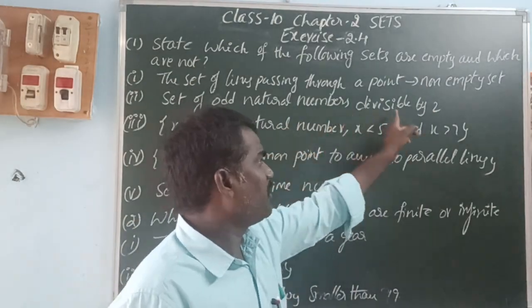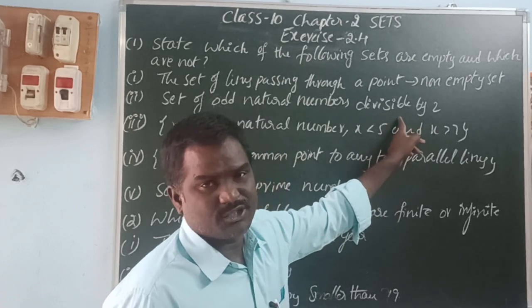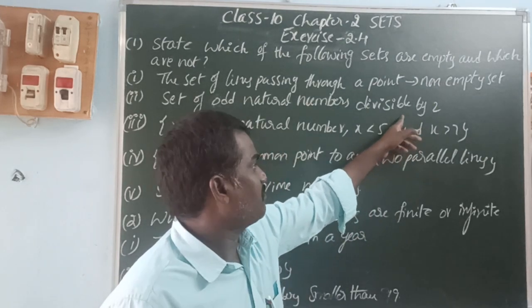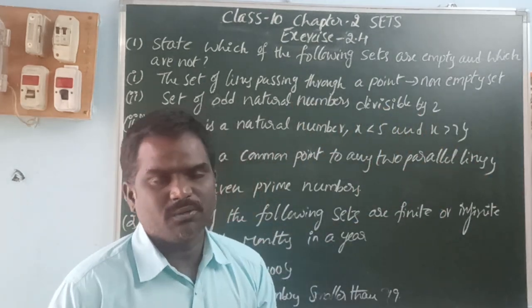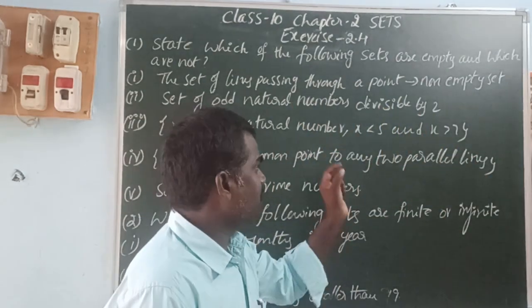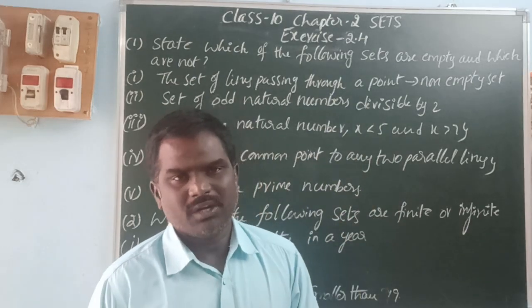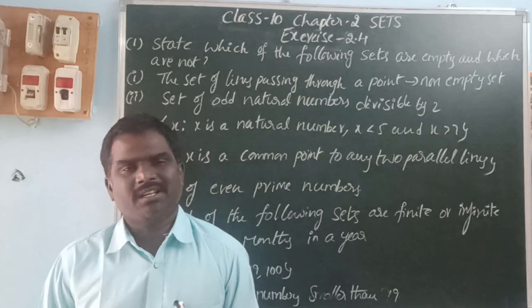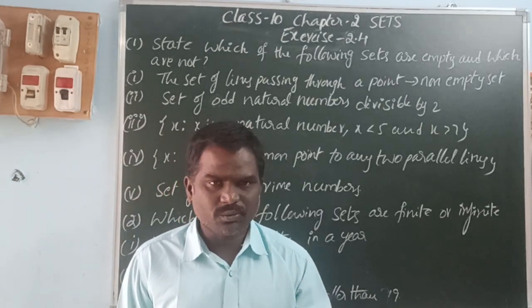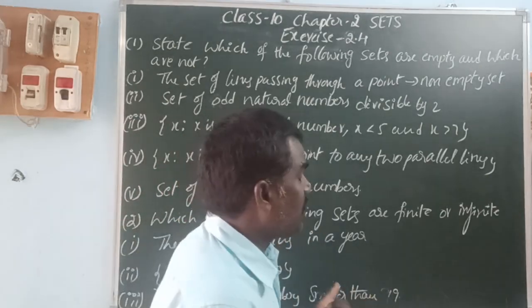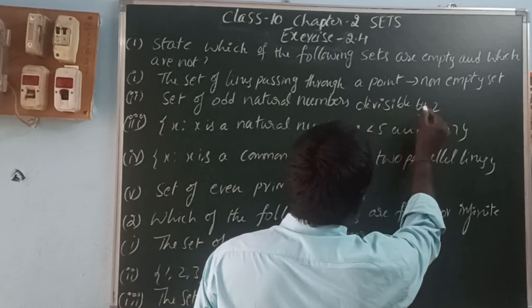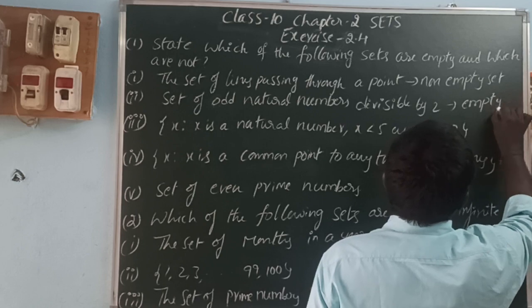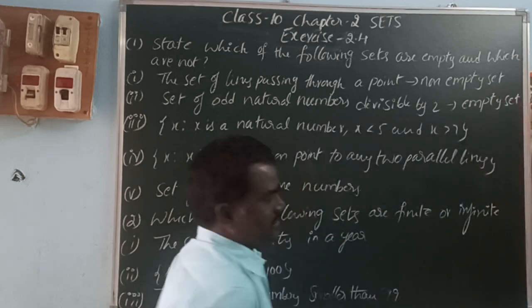Next, the set of all odd numbers divisible by two. Divisible means the remainder is zero after division. Which odd numbers are divisible by two? There are no odd numbers divisible by two, because a number divisible by two is called an even number, and a number where dividing by two gives remainder one is called an odd number. So this is an empty set.